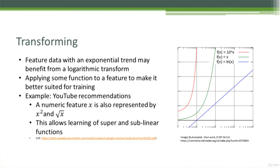So they're feeding in both the original feature X and X squared and the square root of X. You can see in this graph here why you might want to do that. So if I'm starting off with a function of X here on the green line, you can see that by taking the ln, the logarithm of that, I end up with a linear relationship instead, which might be easier for models to pick up on.